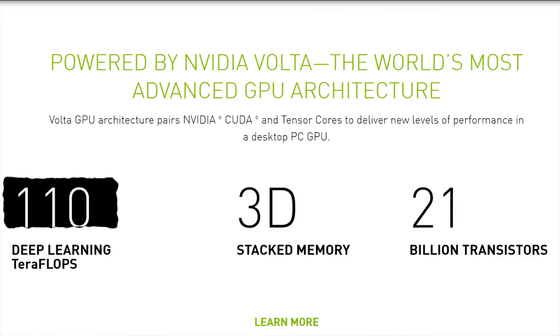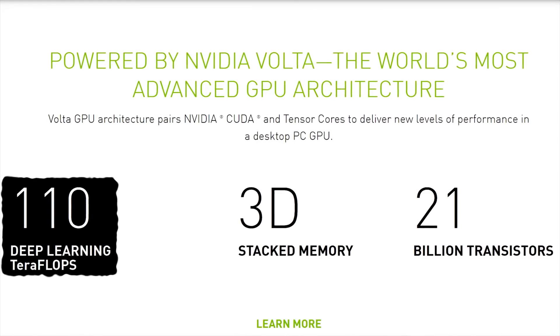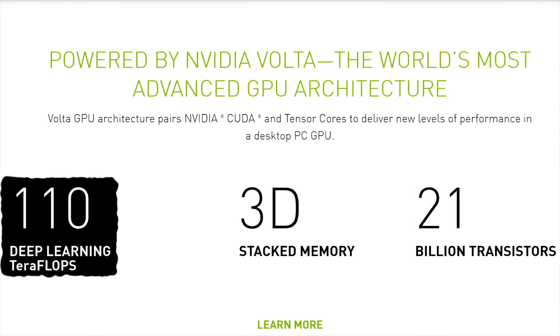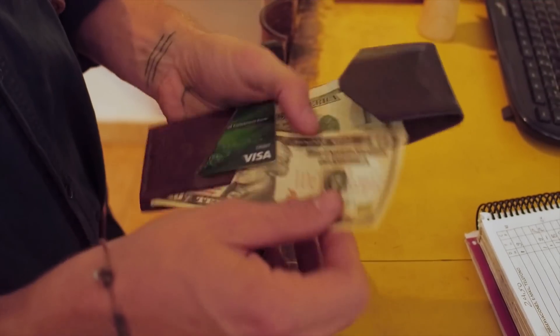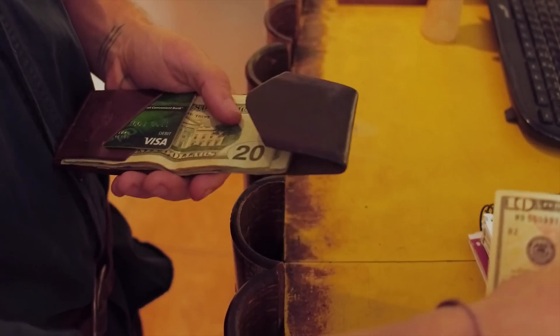The takeaway here is that unless you're an AI or big data researcher, there's no need to be all starry-eyed at how the new Titan V has a hundred and ten teraflops of pure power. But at least you know that the specification on the back of the box doesn't refer to the sound that your wallet makes as it flops down on the checkout counter.